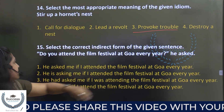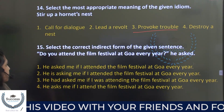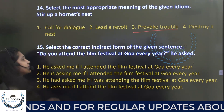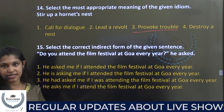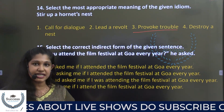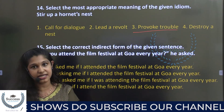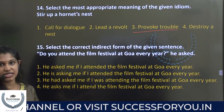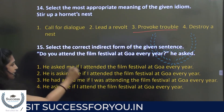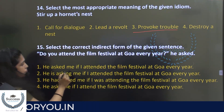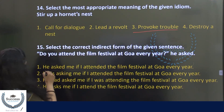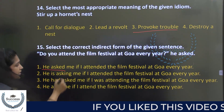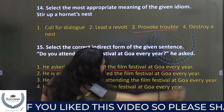Select the correct indirect form of the given sentence: 'Do you attend the film festival at Goa every year?' This is a yes/no question, so in indirect speech we use 'if' or 'whether.' The verb tense changes to past. The answer is: 'He asked me if I attended the film festival at Goa every year.'